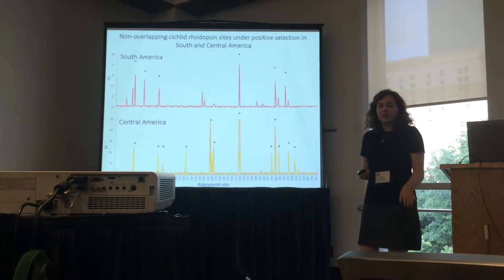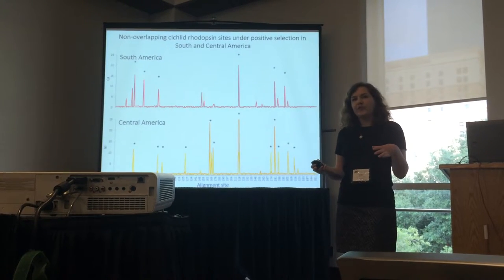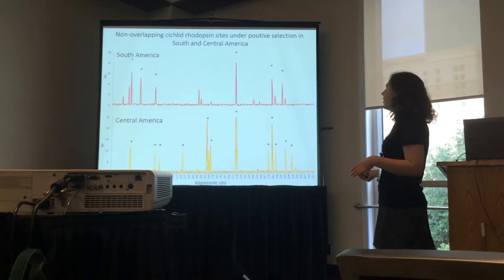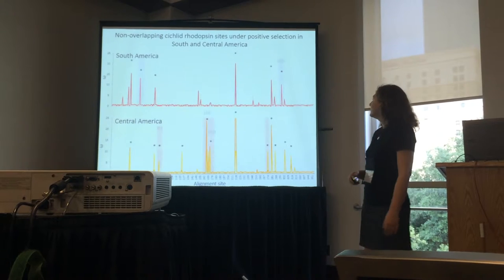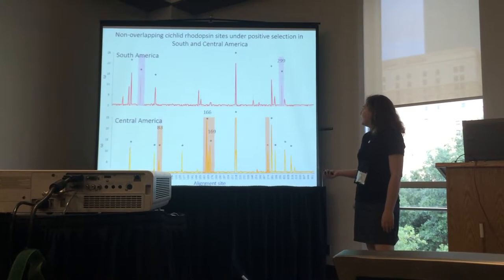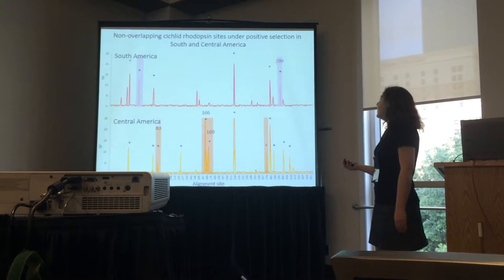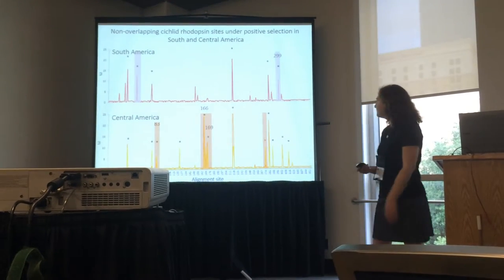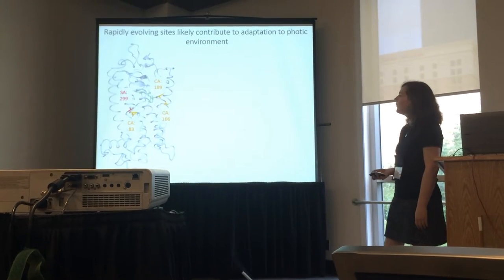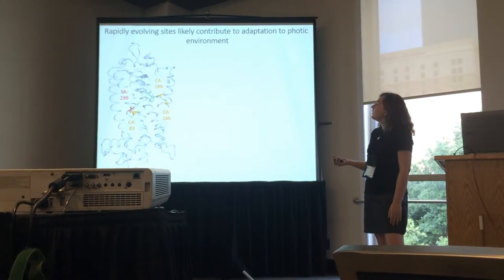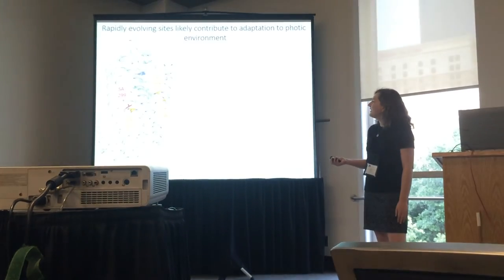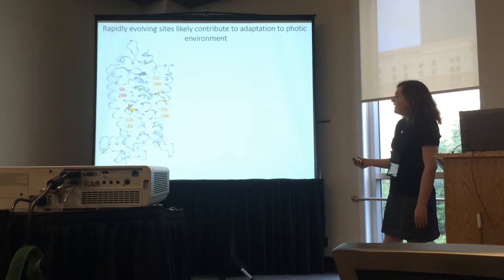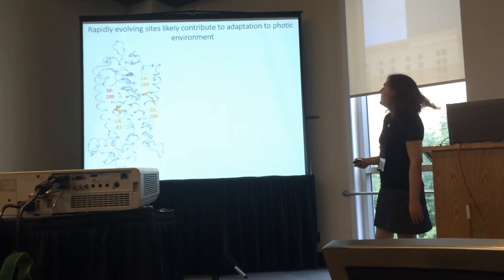When we look more closely at the different sites under positive selection between South and Central America, we do see certain sites under selection in both. However, I have pinpointed some sites that are not overlapping between the two groups. When we look at these on the crystal structure, we can see that some cluster together, a number near the chromophore, which actually activates the pigment.